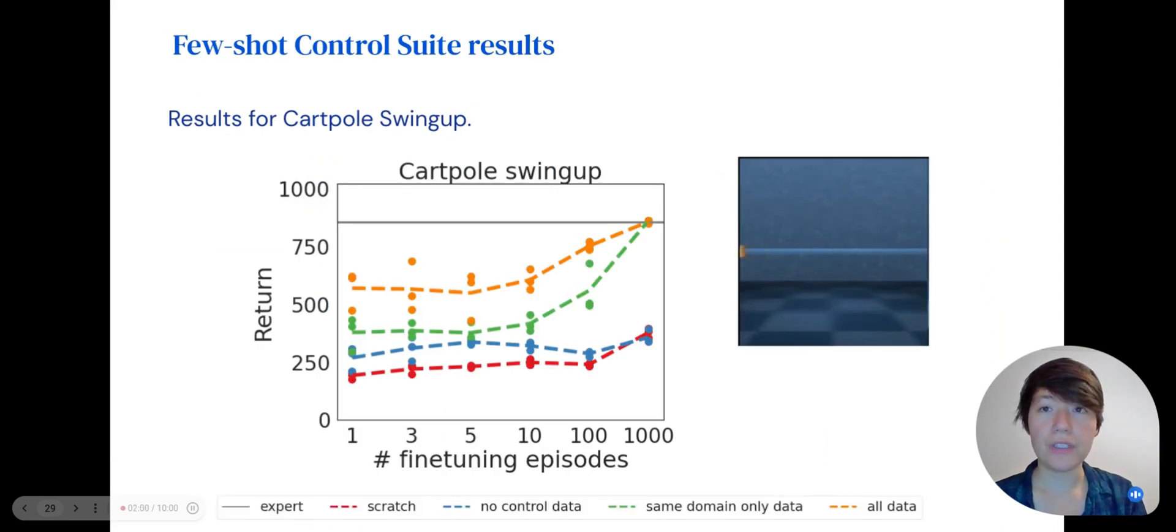These are the fine-tuning results for cartpole swing-up from the DeepMind control suite from state, so no pixel observations are present. Including data from other domains besides the control suite adds a significant benefit.